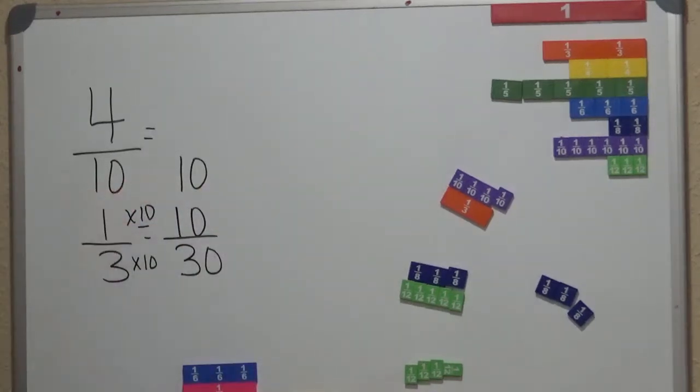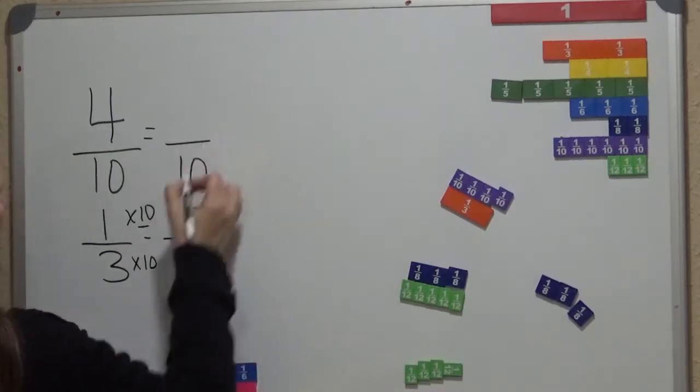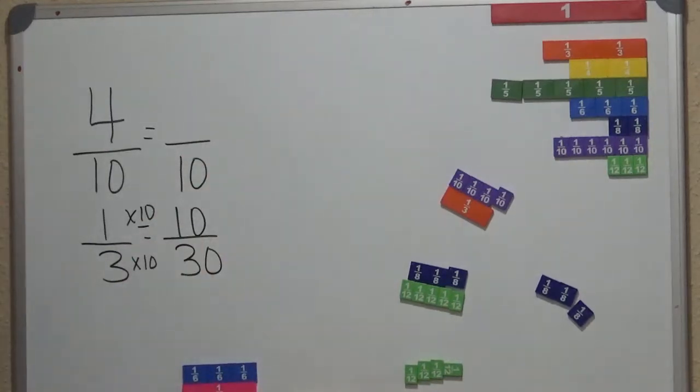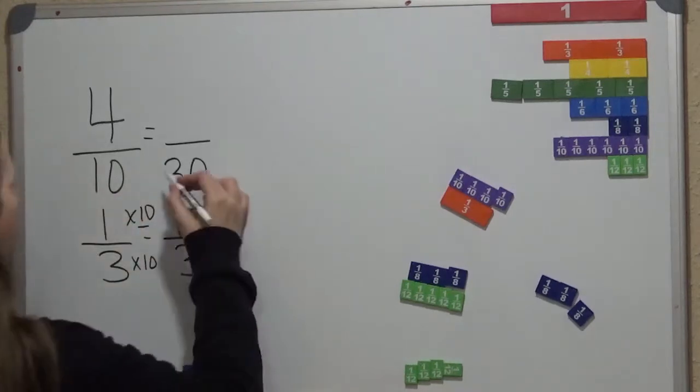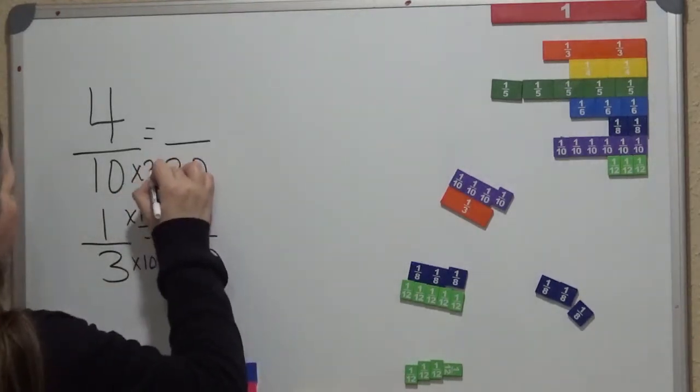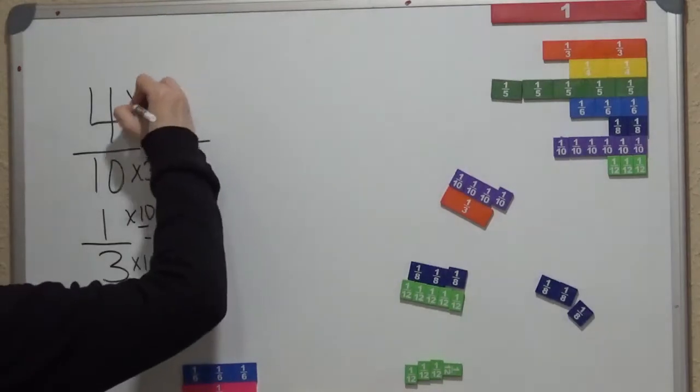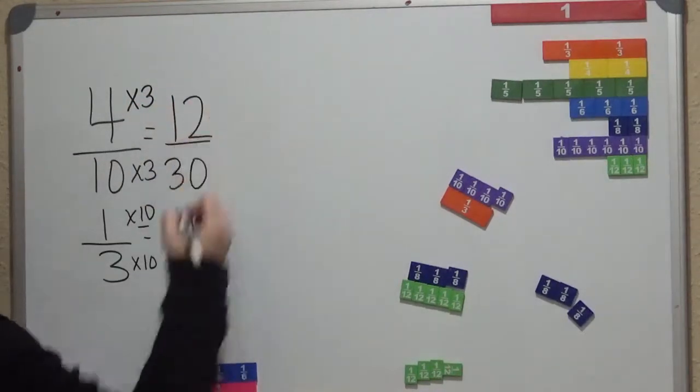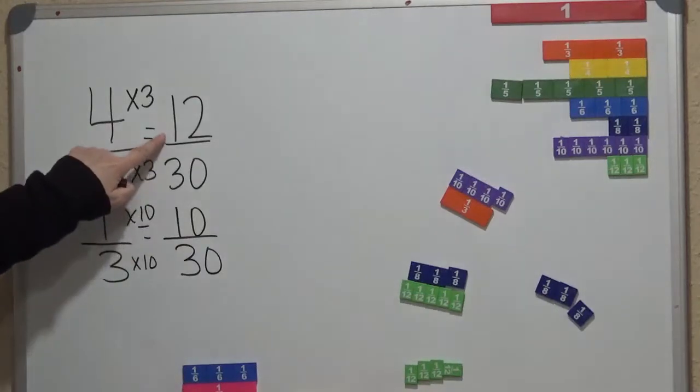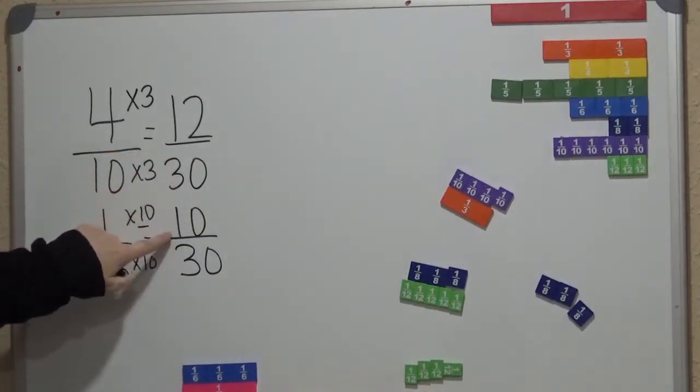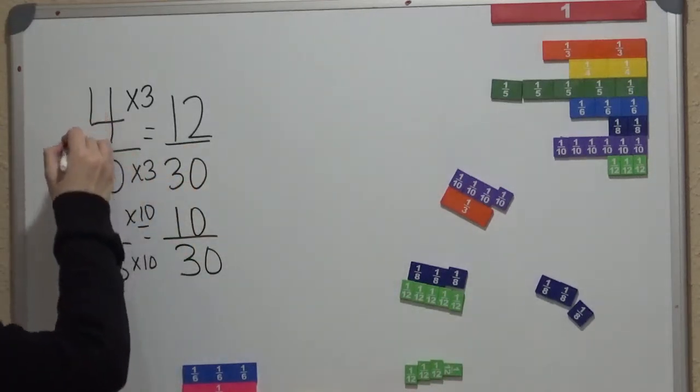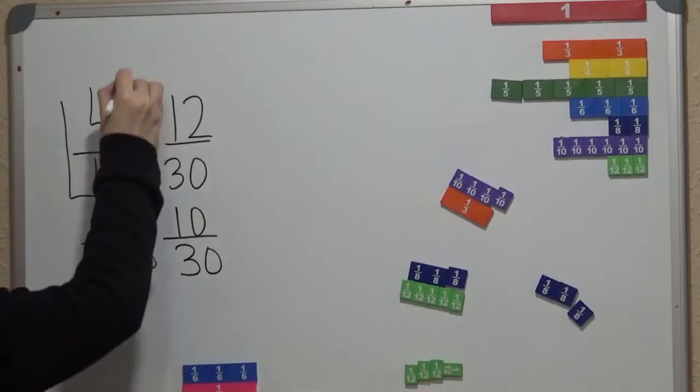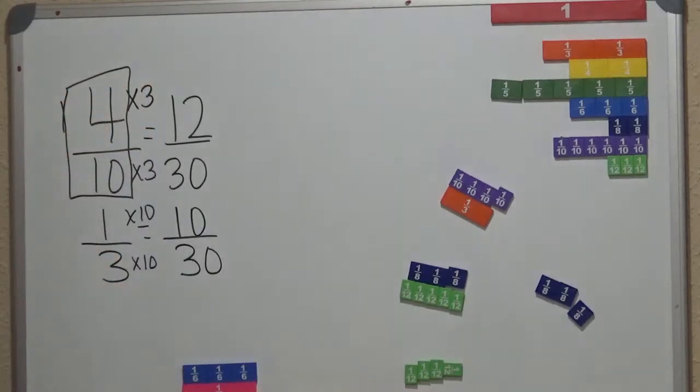Then we would look at this one, and we know, we know that 10 times 3 gives us 30, and we know that 4 times 3 gives us 12. And then we look at it and we see, which one is more, 12 out of 30 or 10 out of 30? We know that 12 out of 30 is more, so therefore we know that 4 tenths is larger than 1 third.